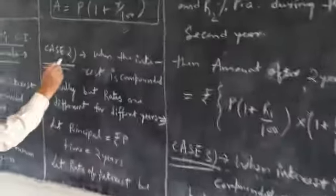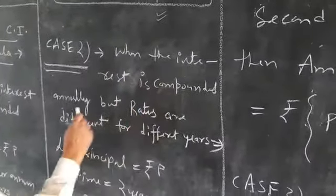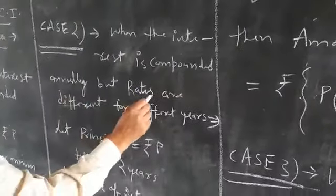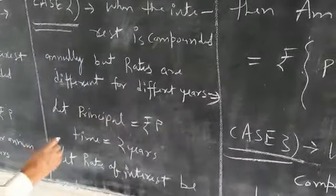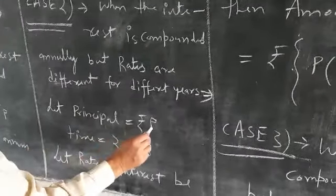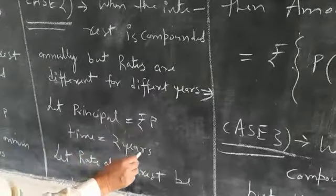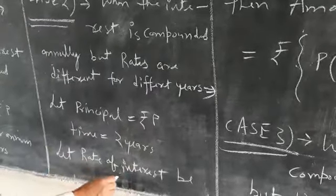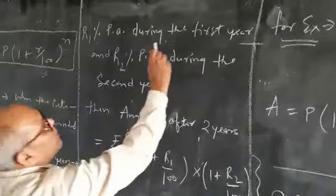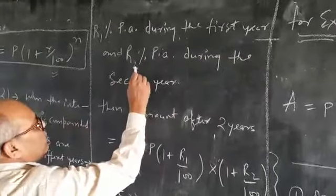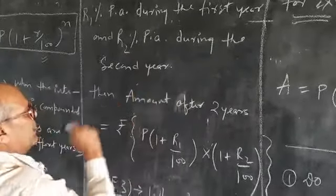Now case two, when the interest is compounded annually but rates are different for different years. Principal equals P, time equals 2 years. Let the rate of interest be R1 percent per annum during the first year and R2 percent per annum during the second year.